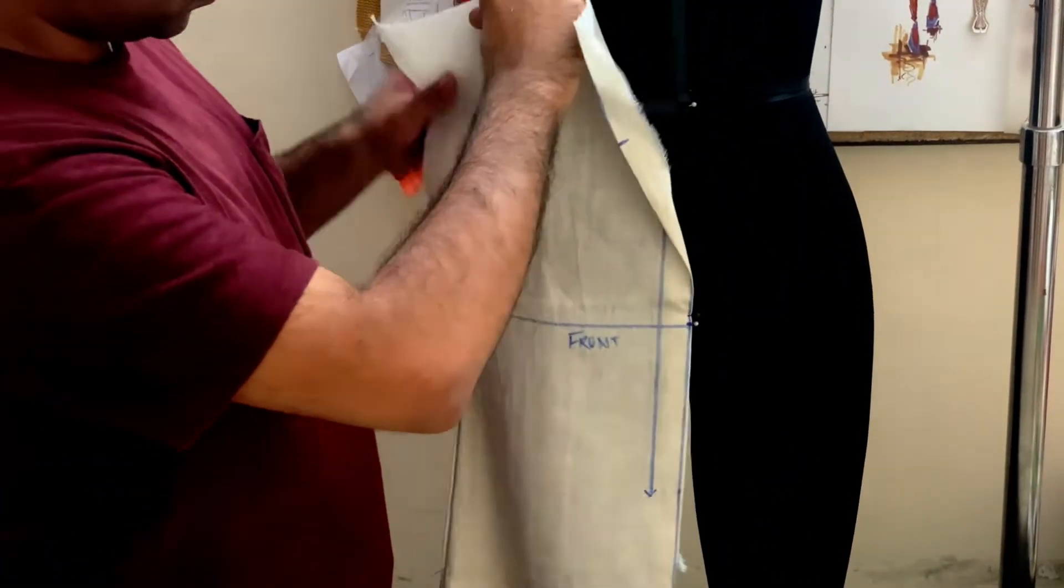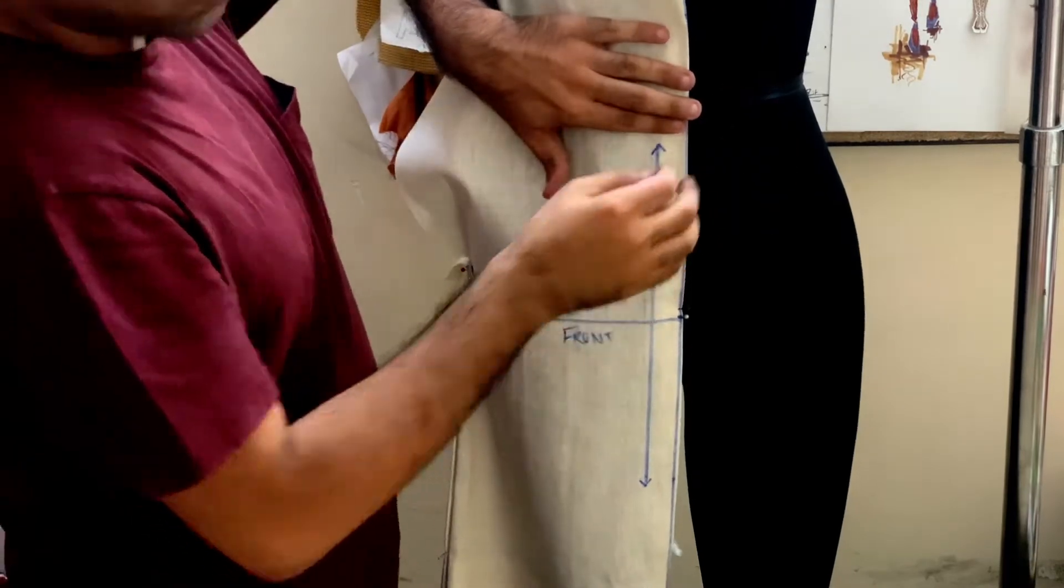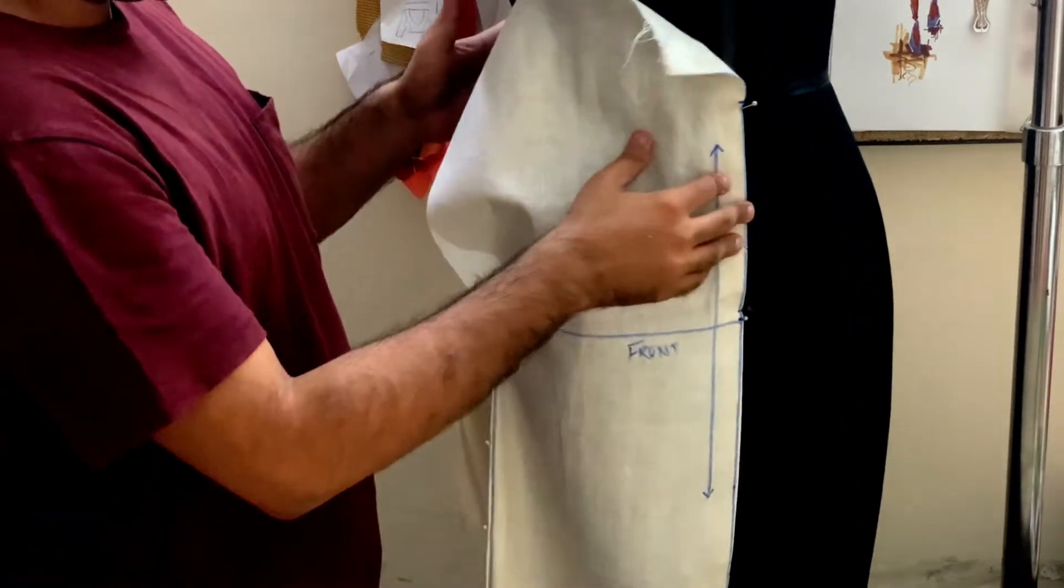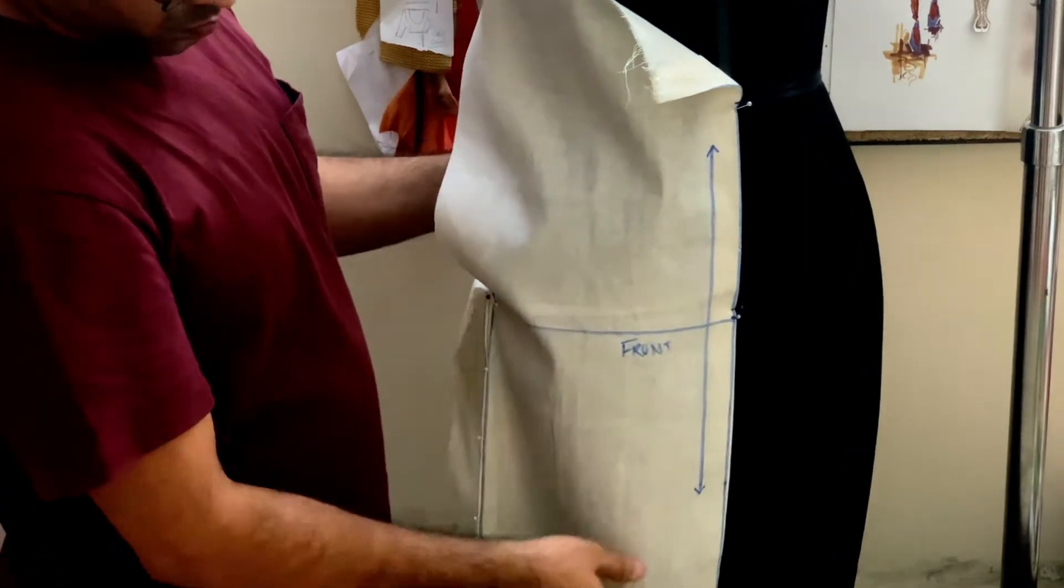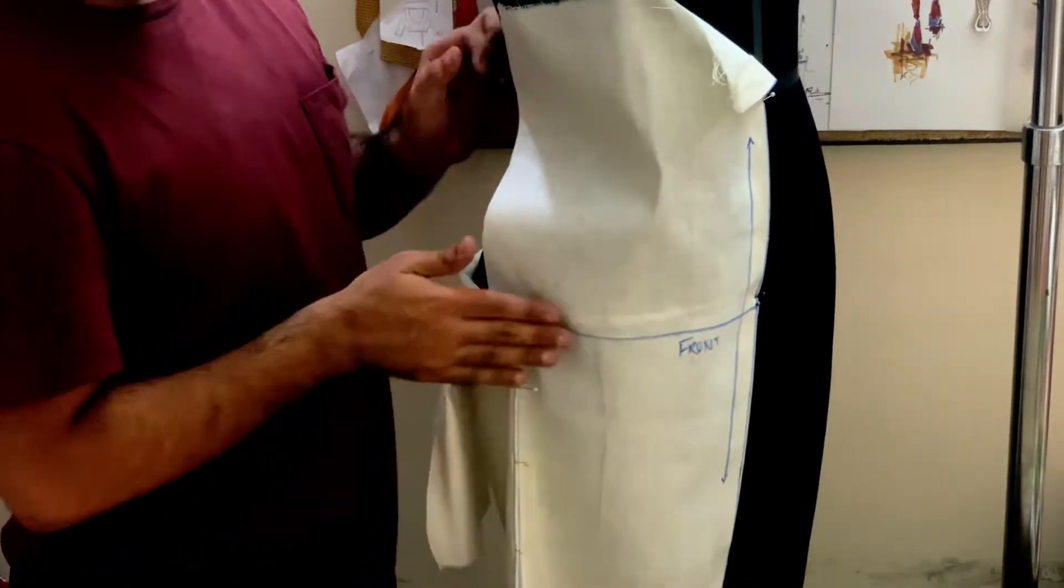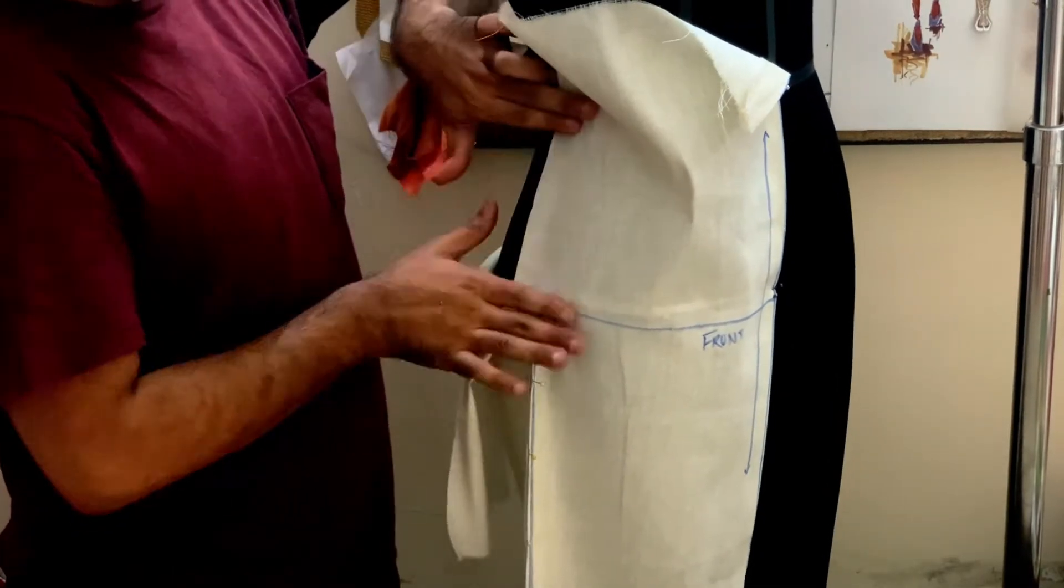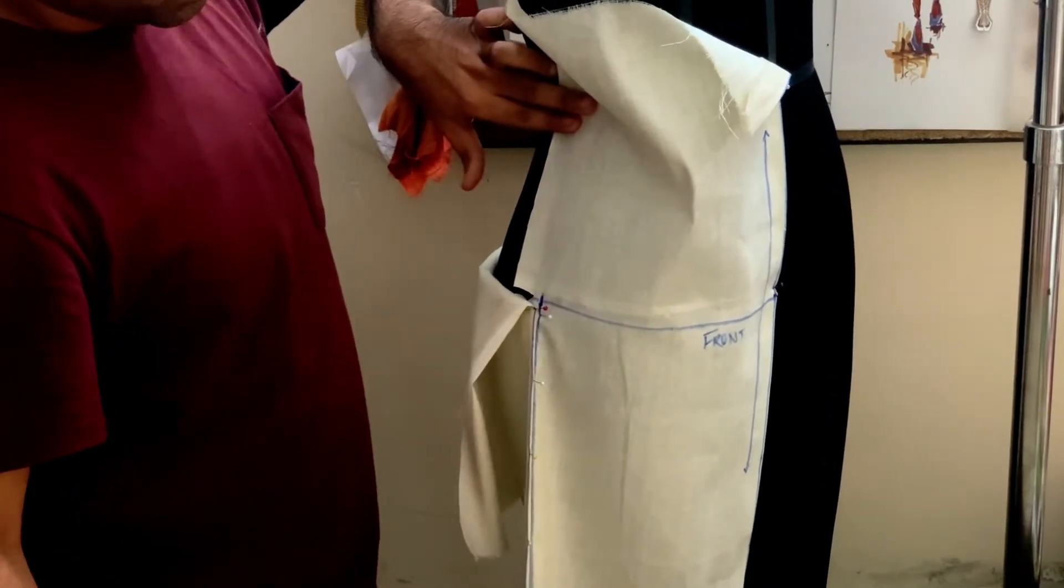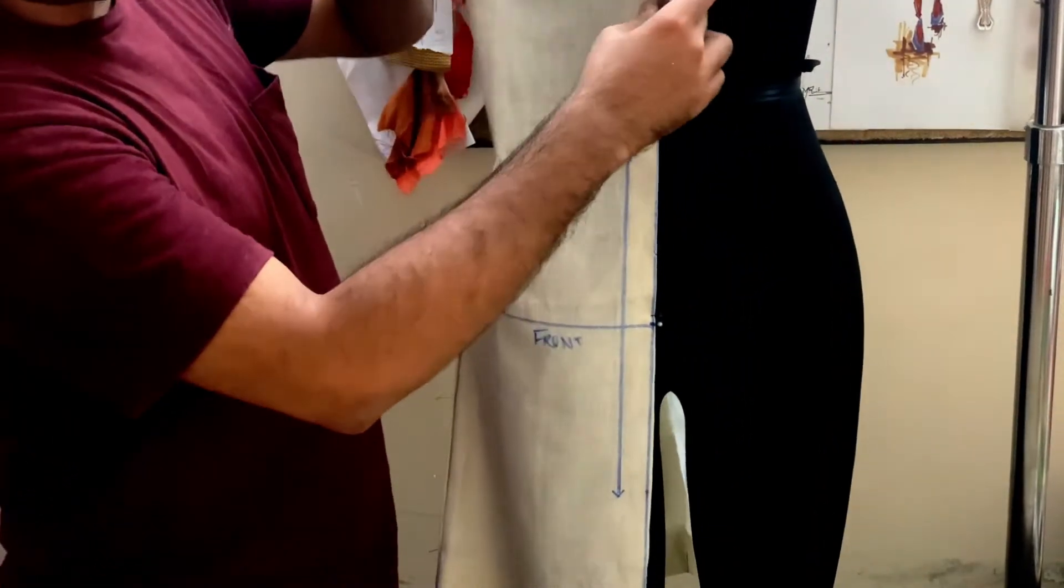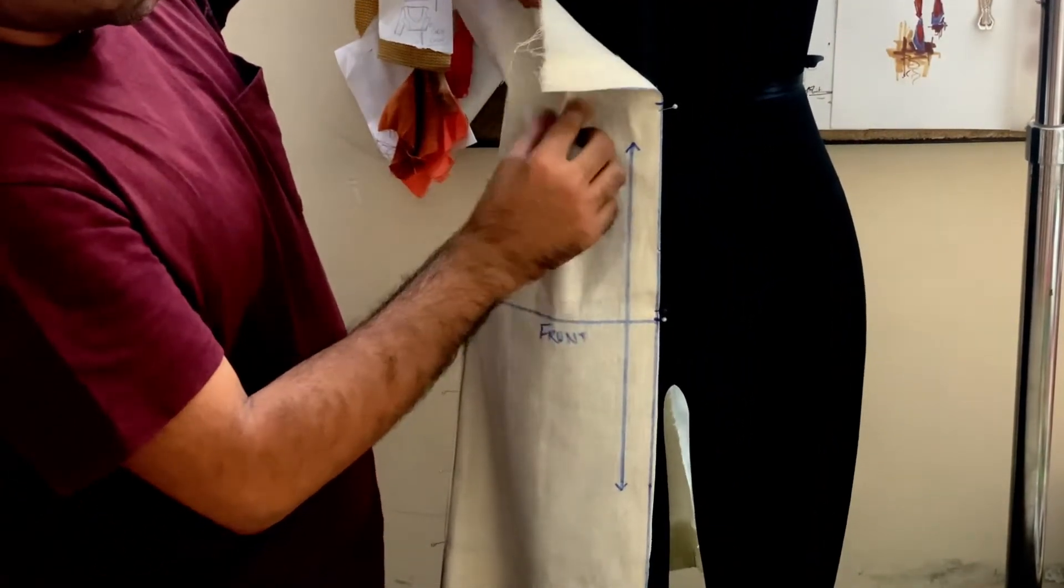We need to also see that the side seam and the other points are going to fall on the dress form where it's supposed to be. And then we will start draping the waist. You will smooth it out on the side seam and pin it on the waist where it is falling naturally, and then you will get dart excess.